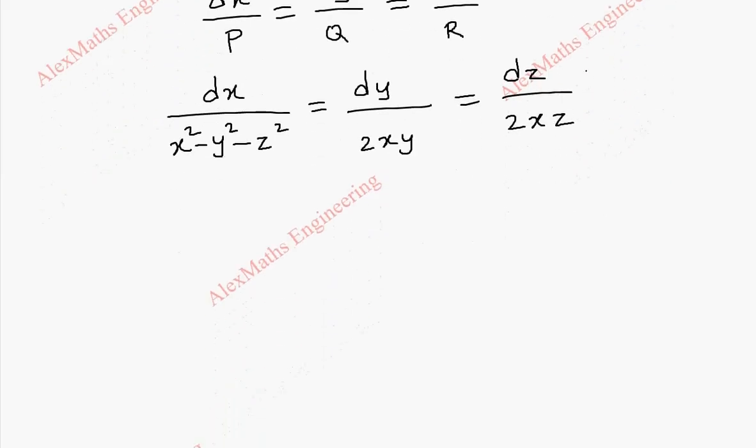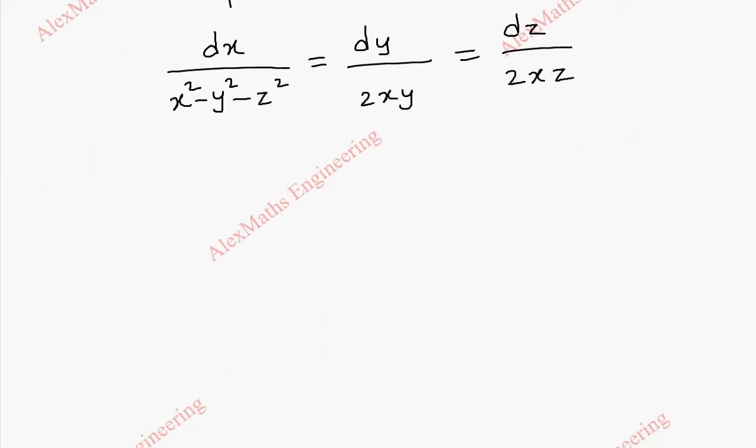Now let's take the last two terms separately, that is dy by 2xy equal to dz by 2xz. Here we can cancel 2x on both sides. Now this is in variable separable form where y terms on one side, z terms on another side. On integration,